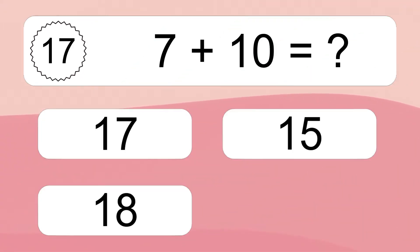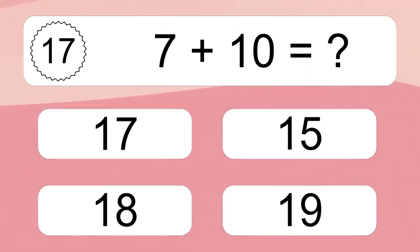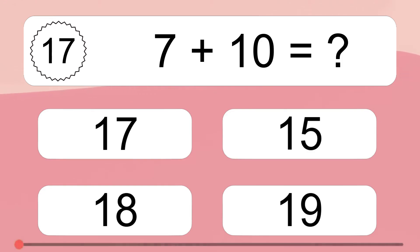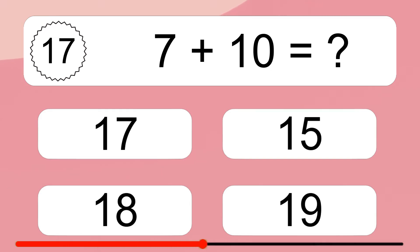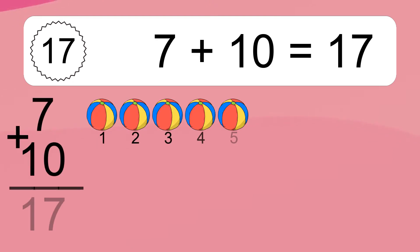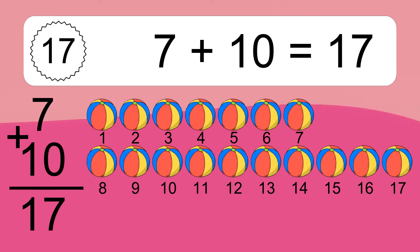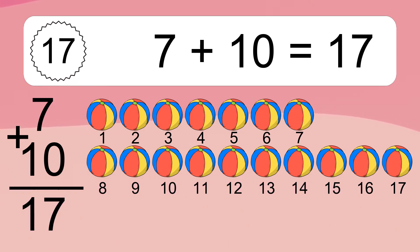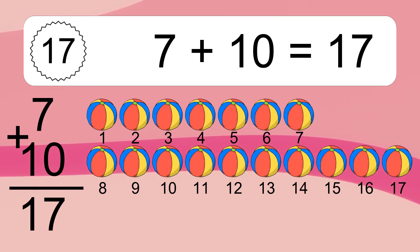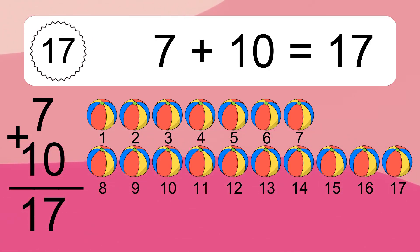7 plus 10 equals what? 7 plus 10 equals 17. Let's count it: 1, 2, 3, 4, 5, 6, 7, 8, 9, 10, 11, 12, 13, 14, 15, 16, 17.